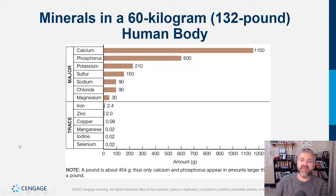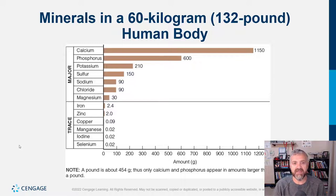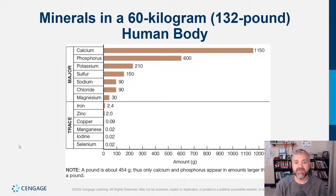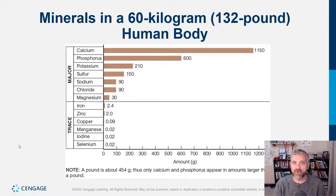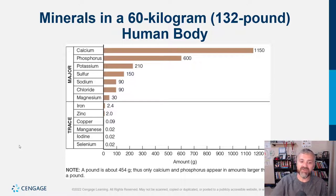In a 60-kilogram or 132-pound human body, calcium and phosphorus are the only two minerals where you have more than a pound in your body. Potassium, sulfur, sodium, chloride, and magnesium are all considered major minerals. The key is how much you need per day — if you need 100 milligrams or more in a day, it's a major mineral. Trace minerals include iron, zinc, copper, manganese, iodine, and selenium. Selenium has only a fraction of a gram in your body and you only need around 50 micrograms a day, but if you don't get it, you are going to die. Trace minerals are wickedly important — you just don't need a lot of them.